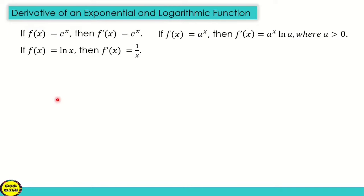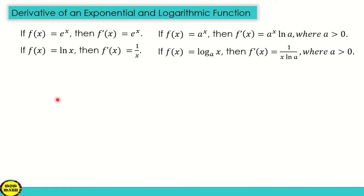If f of x is equal to ln x, then f prime of x is equal to 1 over x. If f of x is equal to the logarithm of x with base a, then f prime of x is equal to 1 over x ln a, where a is greater than 0.